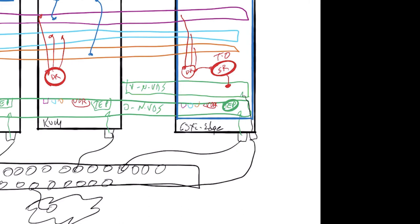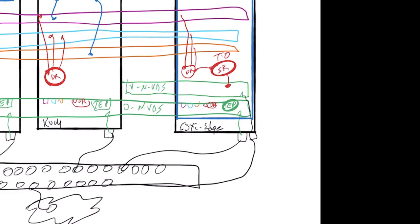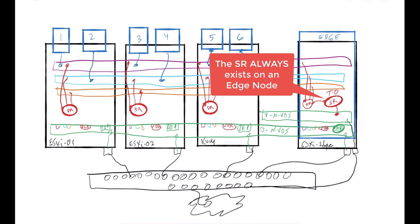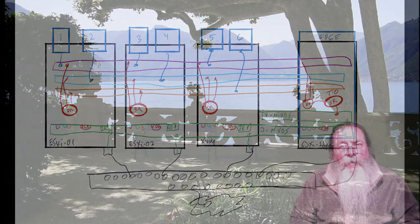So now 1 talking to 6 goes through the distributed router component only. 4 talking to 3 never leaves the host. 5 talking to 6 doesn't leave the host and so forth. So everything takes place in a distributed component. But if any one of those, 1 through 6, needs to reach to the outside world, he will be passing through that service router.